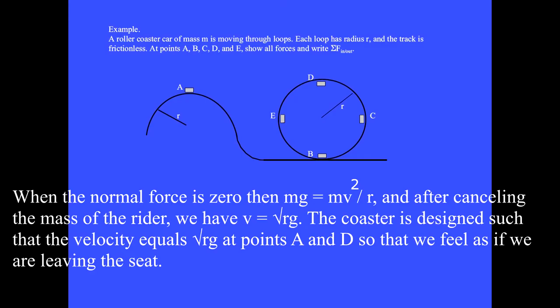When the normal force is zero, then Mg equals Mv² over R. After canceling the mass of the rider, we have V equals the square root of Rg. The coaster is designed such that the velocity equals the square root of Rg at points A and D, so that we feel as if we are leaving the seat.